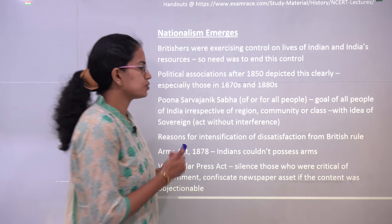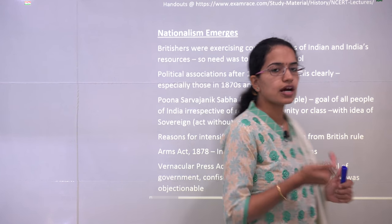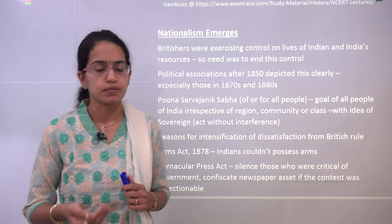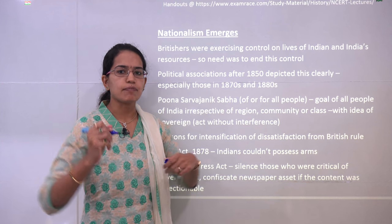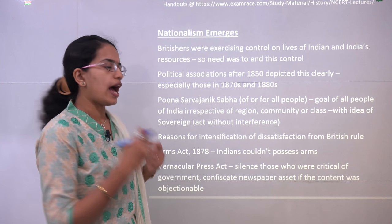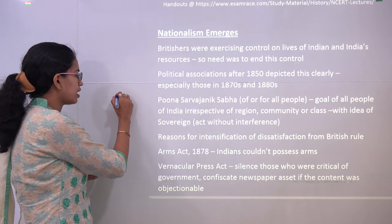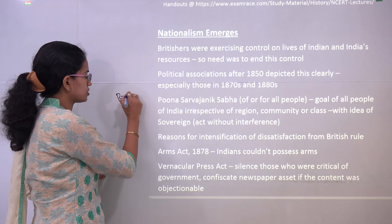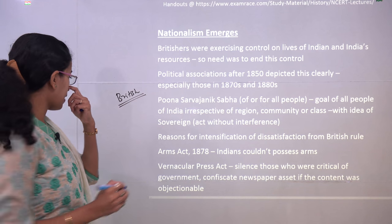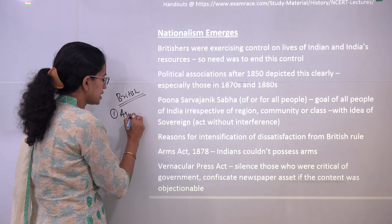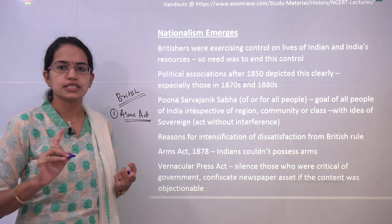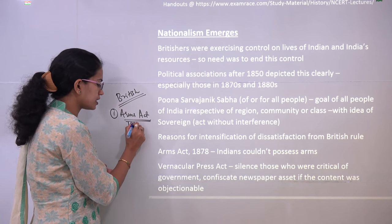Now, how did the issues that we have been reading across in the last chapters start to raise and create a kind of mass movement among the people? There was already a lot of discontent among the Indians and they were trying to speak out against British policies. During this time, three major things happened. The first was the Arms Act, which said that no Indian would be allowed to possess any kind of arms, and that was brought in 1878.